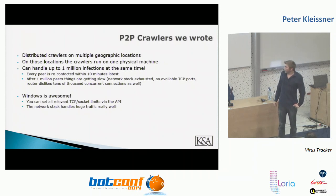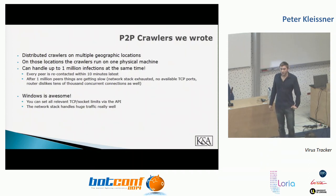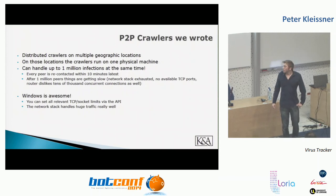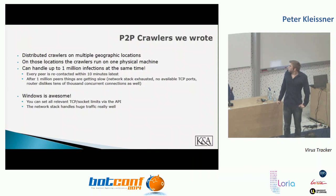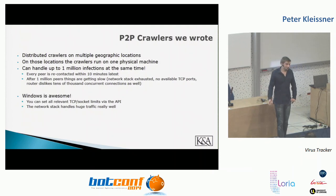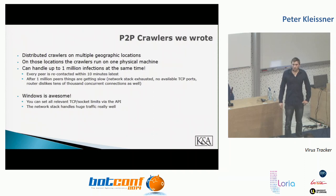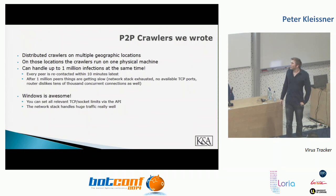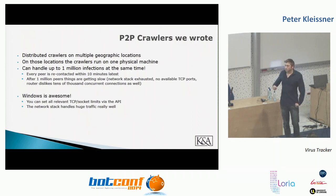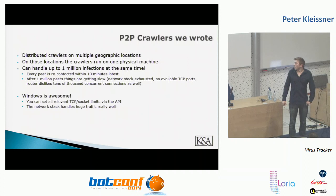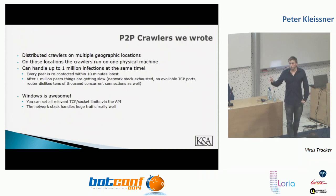It's remarkable that Telefónica hasn't shut down my internet line even though I'm sending 1 million UDP packets every 10 minutes. We run everything on physical machines with normal hardware — 8 or 16 gigabytes of RAM is sufficient. Above 1 million peers things get slow: the network stack gets exhausted managing that many simultaneous connections from one machine. For Windows, you can set relevant limits and drop timeouts to handle this, and from my experience the Windows network stack handles it really well.